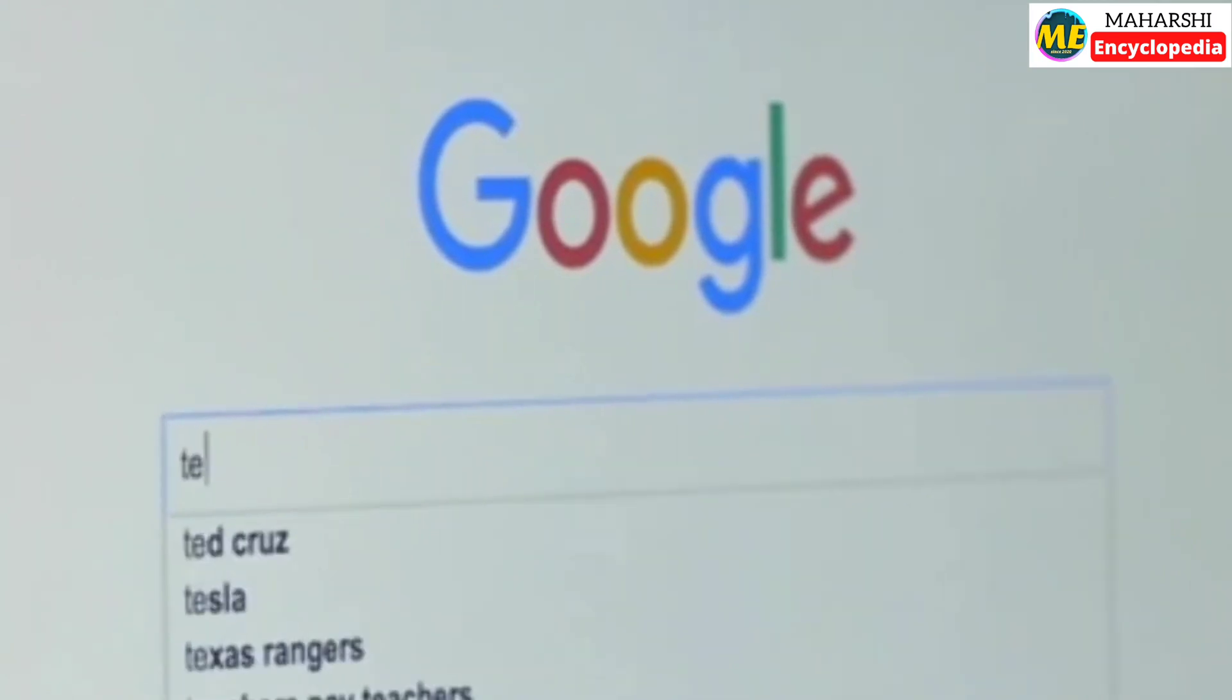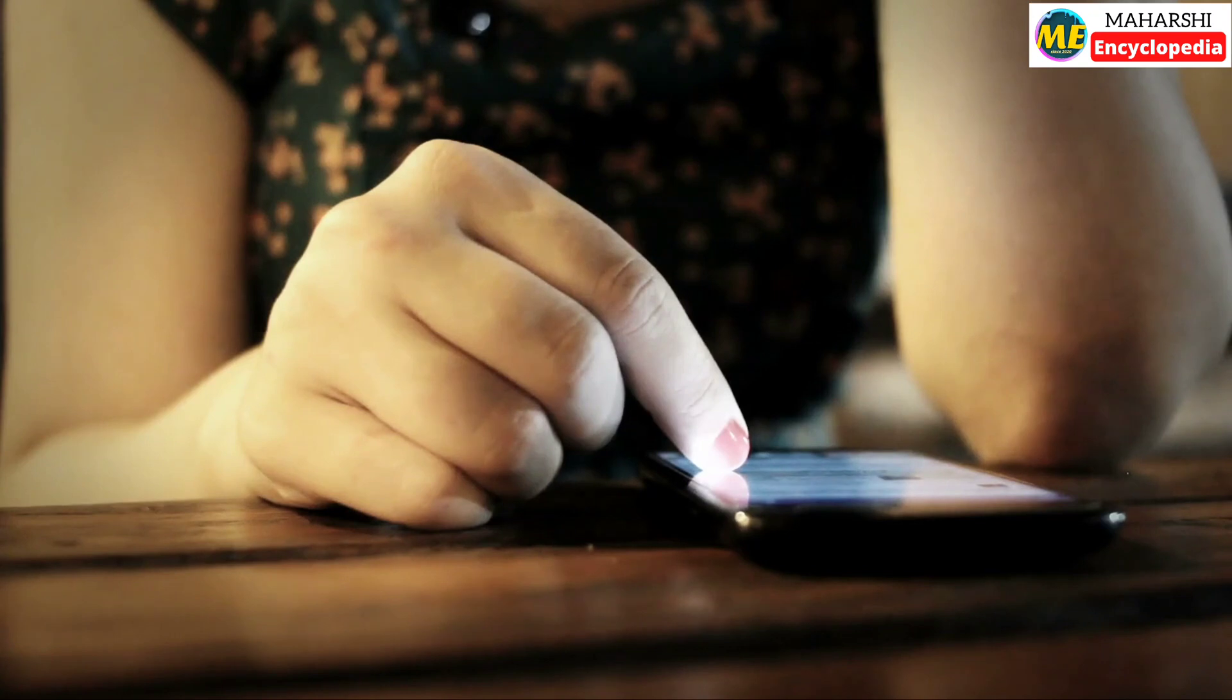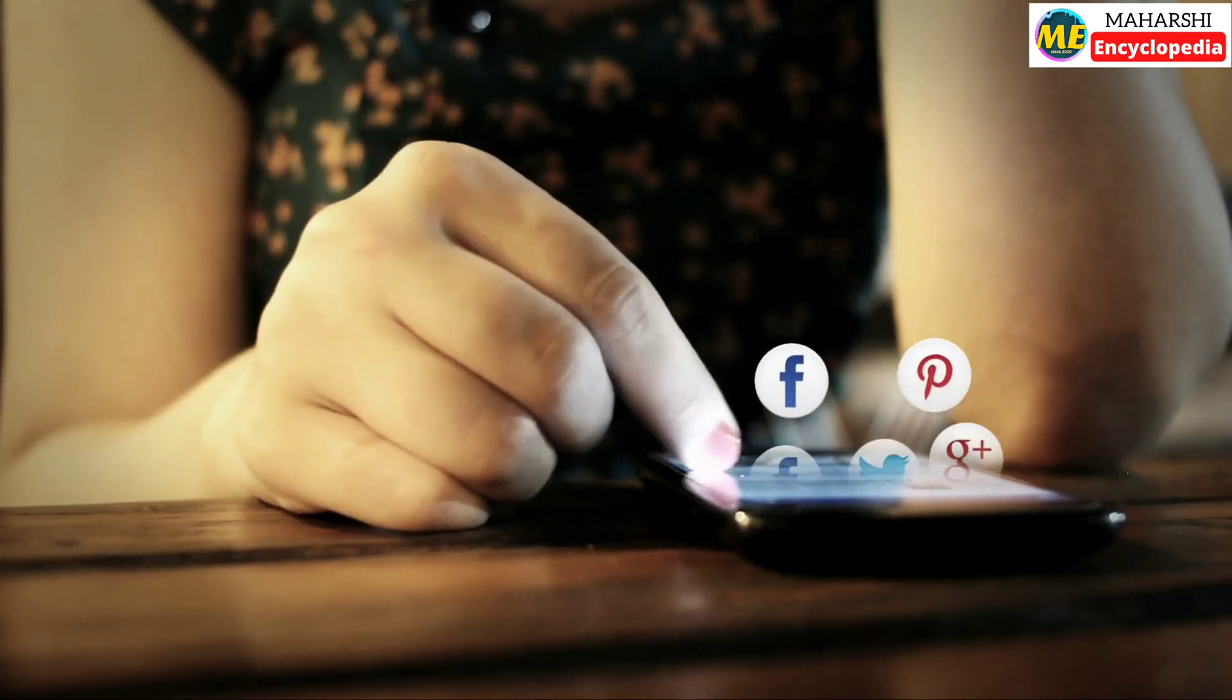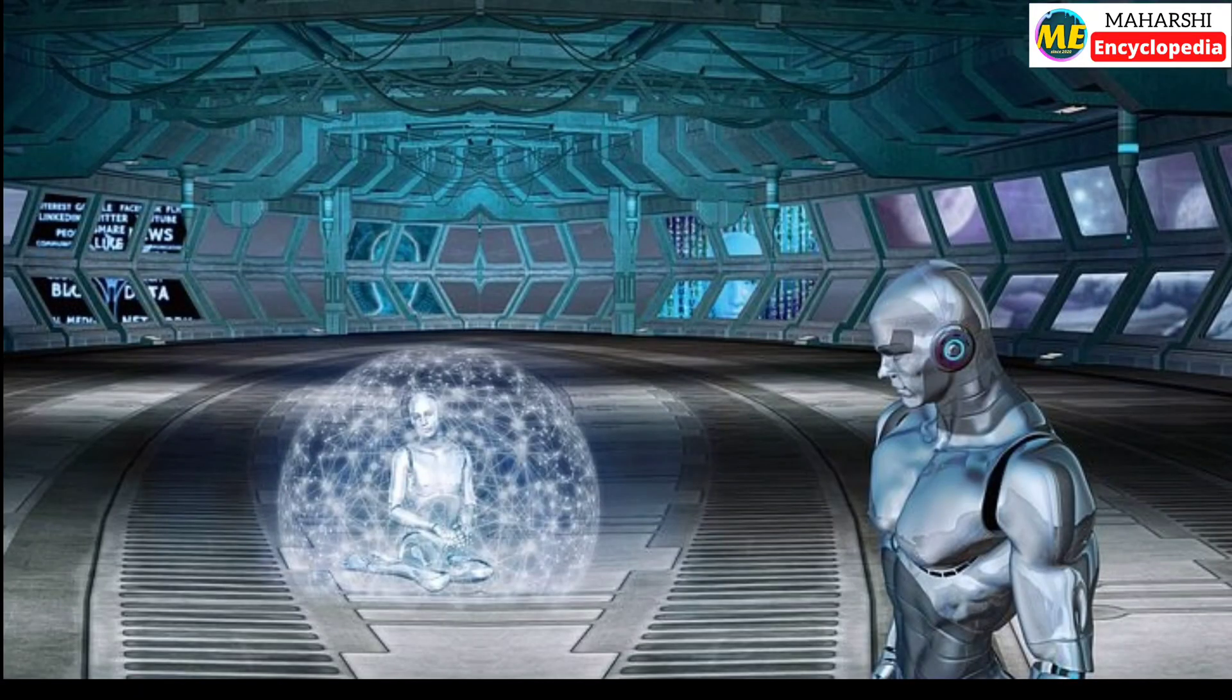When we search online for any item or topic, only those related ads are displayed for a few days in our mobile. This AI understands our likes and dislikes depending on the topic we are searching for and provides us with useful data. Well, let's see how this AI actually works.